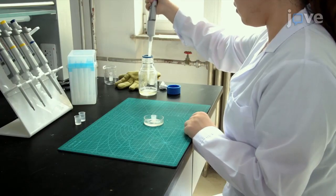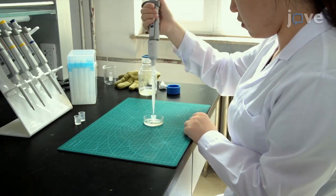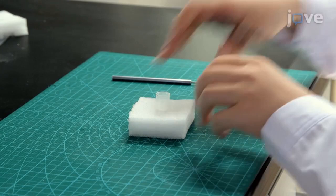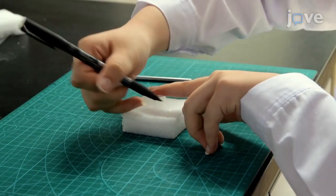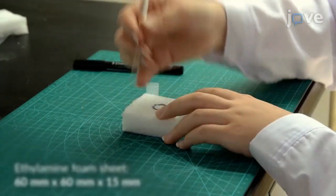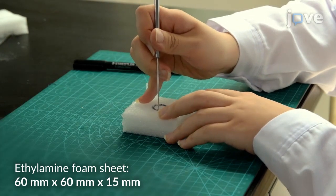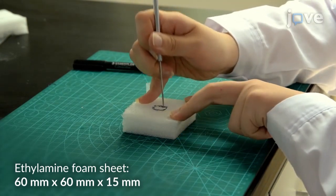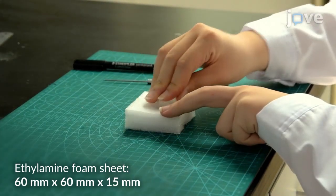Then, pour the agar gel into the FBOC to the desired thickness. Make an FBOC base by boring a 10 mm deep hole in the center of a piece of ethylamine foam sheet with the same diameter as the FBOC. Insert the FBOC into the hole.